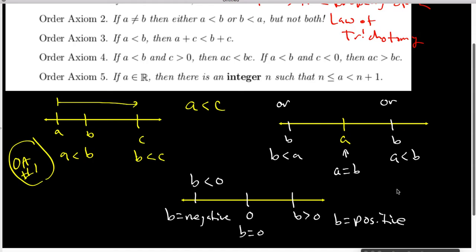So another way of stating the law of trichotomy is that every real number is either positive, negative, or equal to zero, but it is only one of those three things.